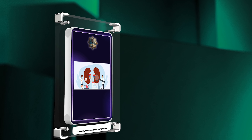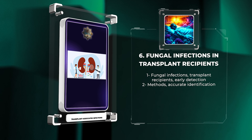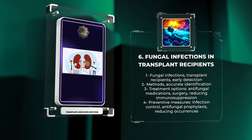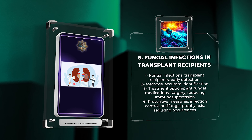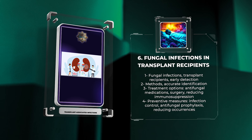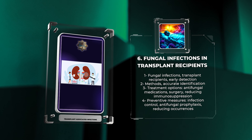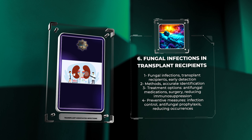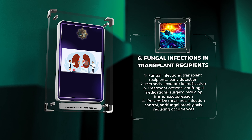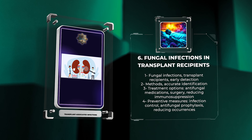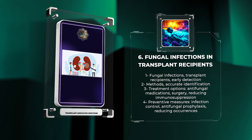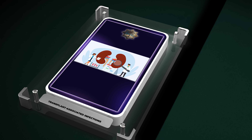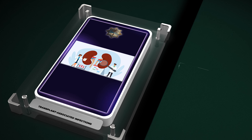Fungal infections are a notable problem for transplant recipients. Early detection is crucial, and various methods can aid in accurate identification. Treatment options include antifungal medications, surgery, and reducing immunosuppression. Preventive measures, like infection control and antifungal prophylaxis, are effective in reducing occurrences.